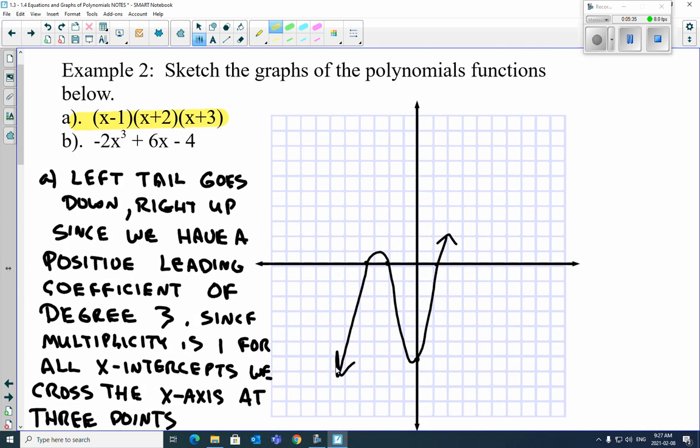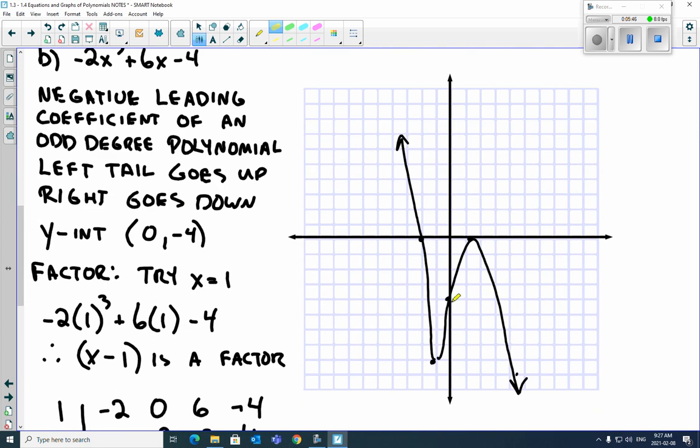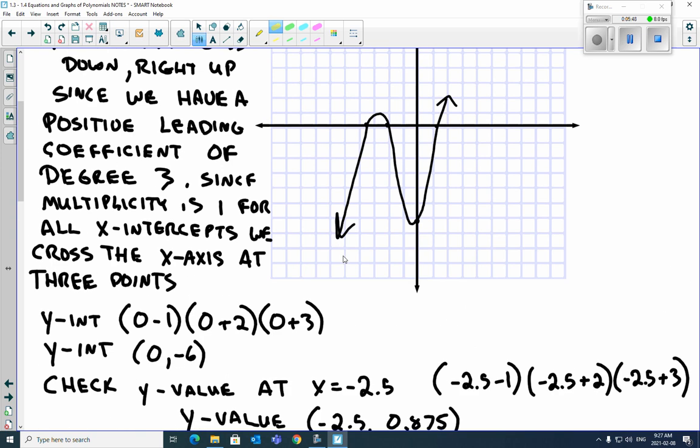Now, what about if you get an equation like this where it's negative 2x cubed plus 6x minus 4? Well, we know a couple of things. That negative 4 right away is the y-intercept. And you can see negative 4 is our y-intercept there. We know that it's, oh, here, let's write it down here. It's cubic.